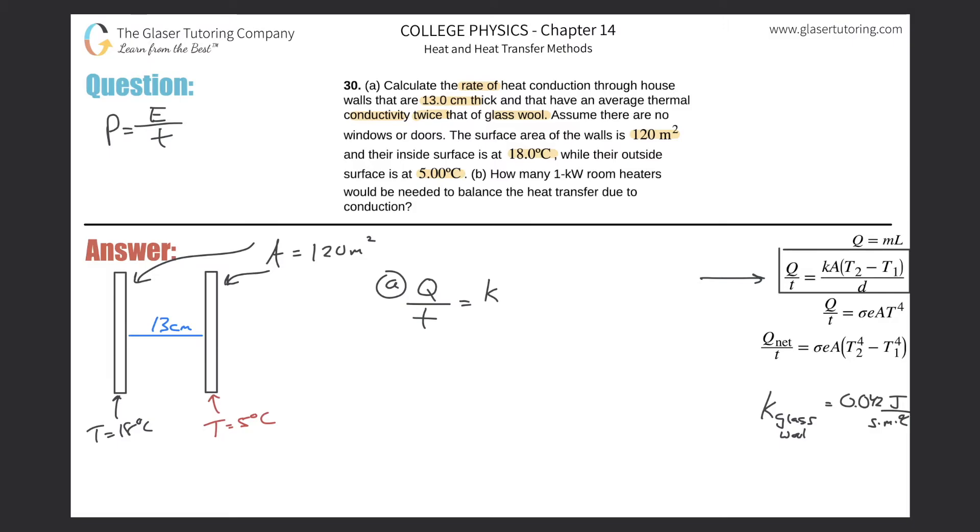This is multiplied by the surface area over which the conduction is happening. The conduction is happening over the whole area of the wall. Multiplied then by the difference in temperatures between the two sides of the object. In this case, we're talking about the wall, so it's the temperature on the inside versus the temperature on the outside.